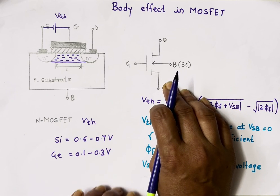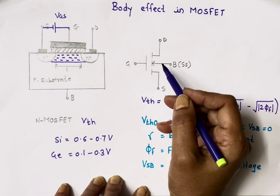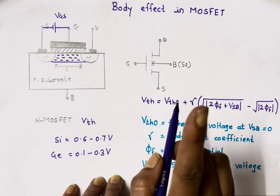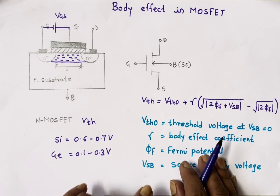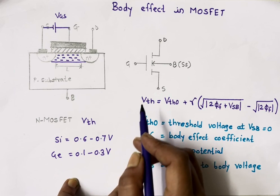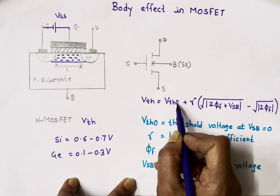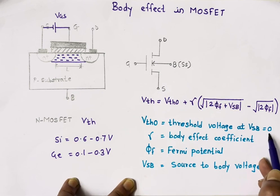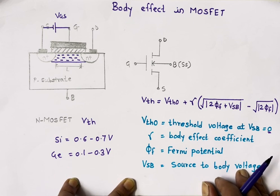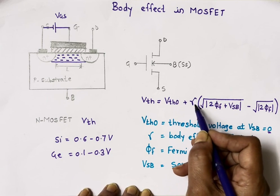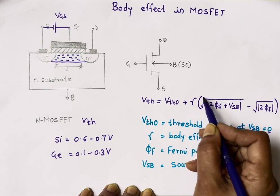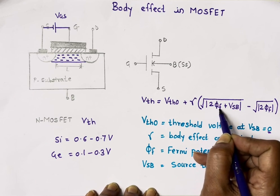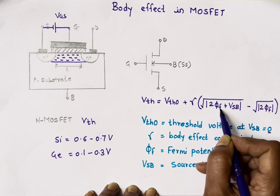We generally say MOSFET has 3 terminals — gate, drain, and source — but it actually has 4 terminals, and the body terminal is very important. The equation for threshold voltage is: VTH = VTH0 + γ × (√(|2ΦF + VSB|) − √(|2ΦF|)), where VTH0 is the threshold voltage when source and body are at the same potential, γ is the body effect coefficient, ΦF is the Fermi potential, and VSB is the voltage between source and body.